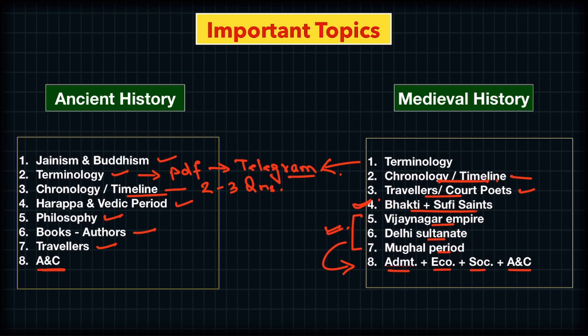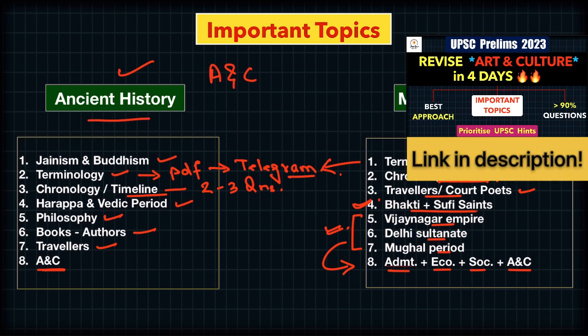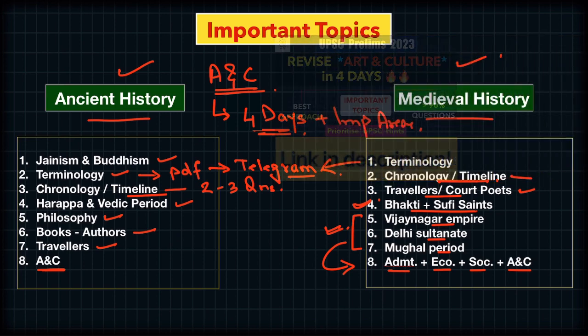If you are not studying the whole subject, at least cover these priority topics. For art and culture, I have already made a separate video where we discussed how you can complete the entire art and culture and the most important areas. You can check out that video — I will also mention it in the description.